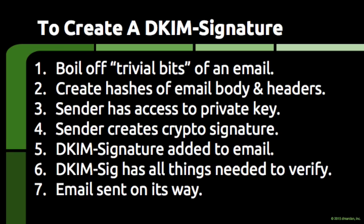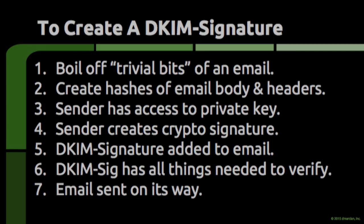Step 5: The resulting cryptographic signature is added to a DKIM signature header, which is then inserted into the piece of email. Step 6: The DKIM signature itself contains the body hash, the cryptographic signature, and information on where the matching public key can be retrieved. Step 7: The email is then released into the wild, sent on its way to eventually be delivered.